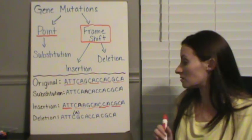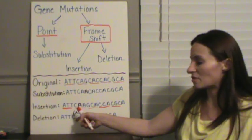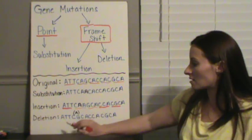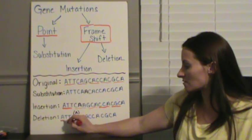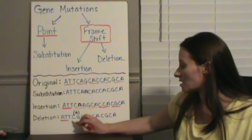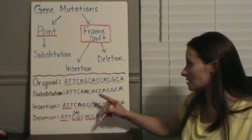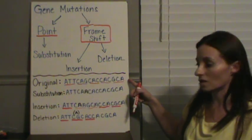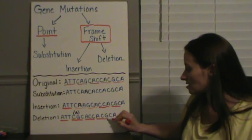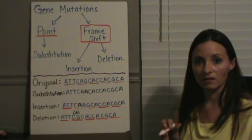Same thing with a deletion. We remove the A here. So this A right here, we removed between the C and the G down here. And as you look at this, this first codon is good, ATT. But this next one, CGC is not. Then we have ACC, which was not a codon up here. ACG, and then our last one we actually only have two bases for.